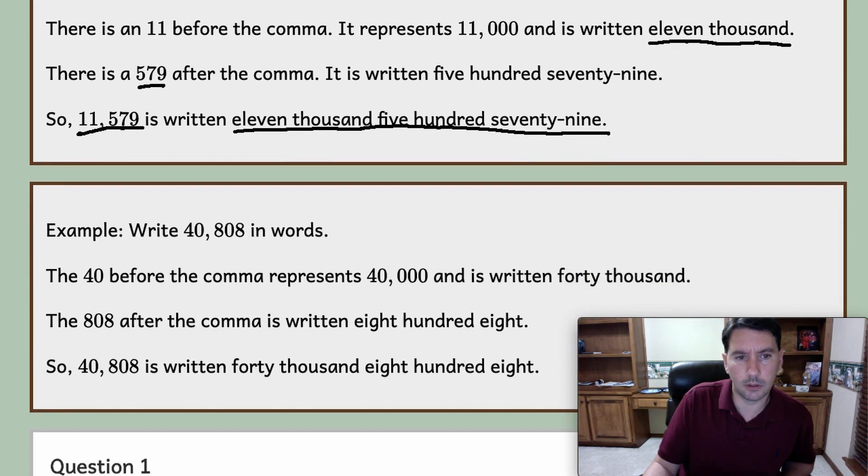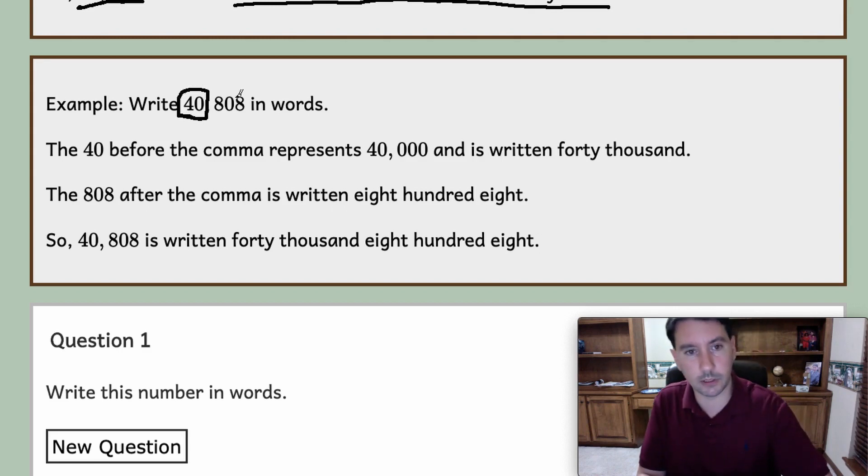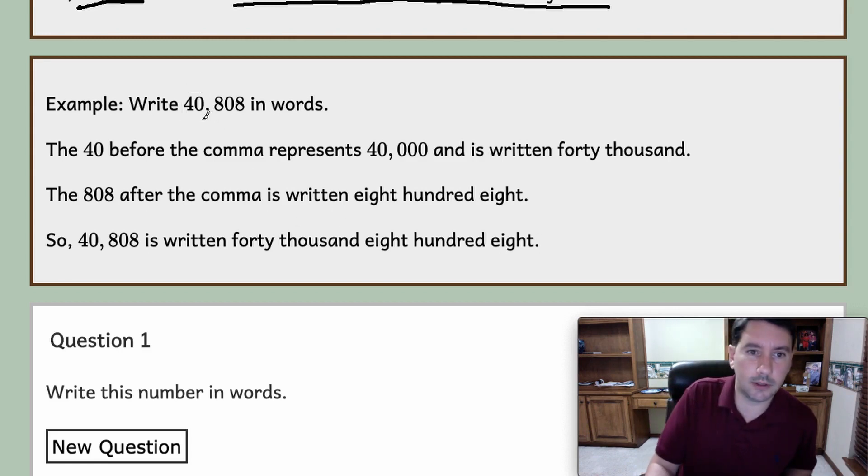Let's do another one. We're going to write 40,808. That's how you'd read that. You read whatever numbers before the comma just as you would say it usually, so that's 40, and then once you reach the comma you say thousand.